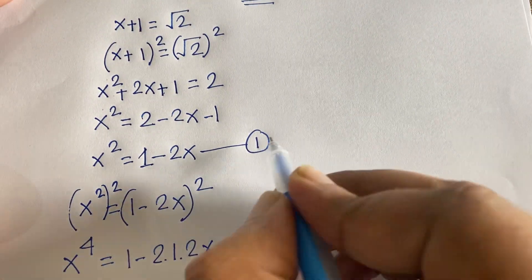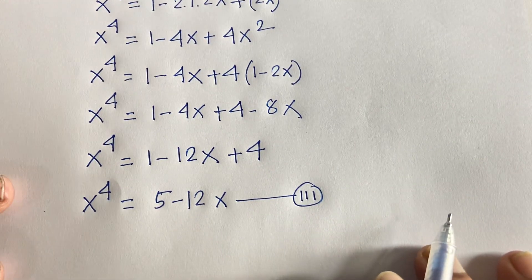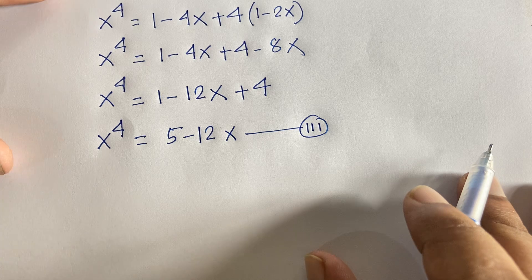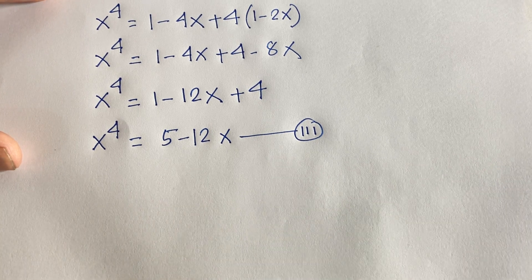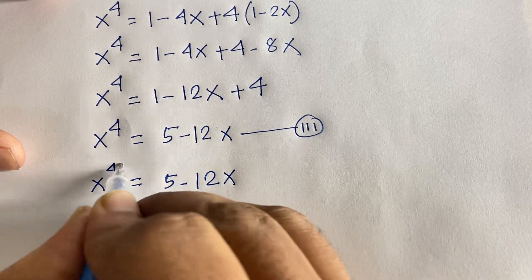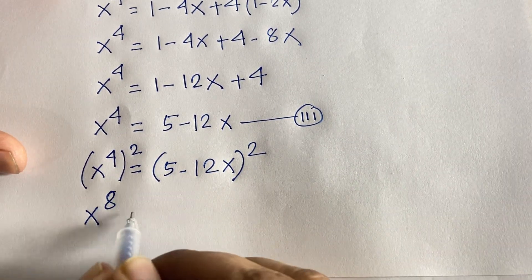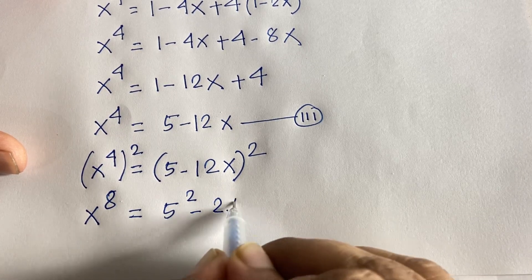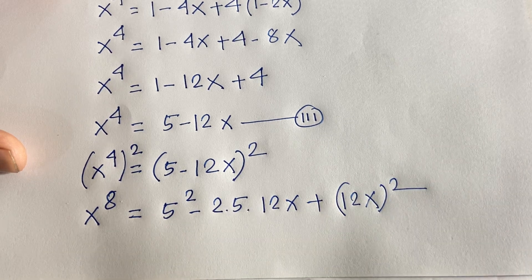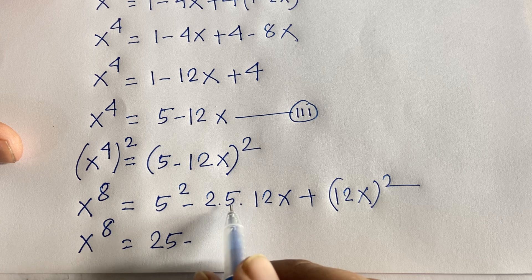So our equations so far: second equation is x² = 1 - 2x, and our third equation is x⁴ = 5 - 12x. Now again I use both sides squared because we need x to the power 12. So x⁴ = 5 - 12x, squaring both sides gives x⁸. Using the identity (a - b)² = a² - 2ab + b², I can say it will be 5² - 2×5×12x + (12x)².